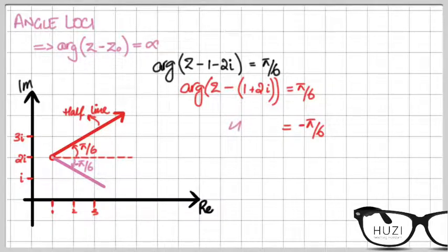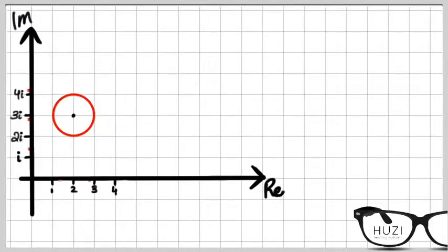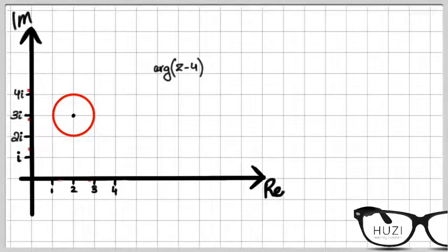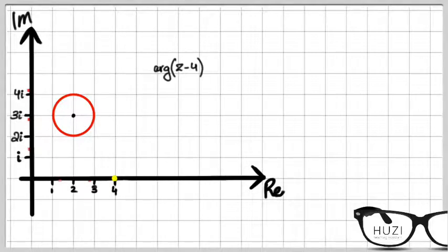The questions are not really this straightforward. Let's say we have a circle whose center is 2 plus 3i, and the question says to find the possible values of the argument of z minus 4. Writing in standard form, the fixed point here is 4 plus 0i. To find the possible values we need to find the highest and lowest possible values of the argument of z minus 4, which means from the fixed point we need to sketch a tangent.